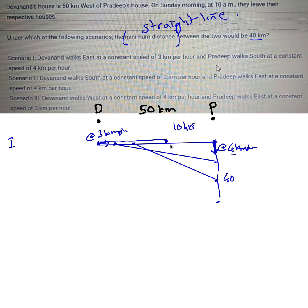Now the straight line distance between them - this is a right angle triangle. One side is 40, this will be 50 minus 30, that is 20. So you can find this out using Pythagoras. It's going to be 1600 plus 400, that is 2000.